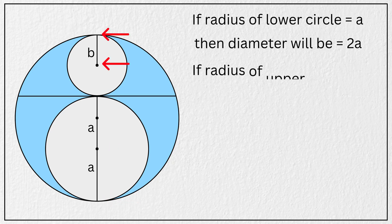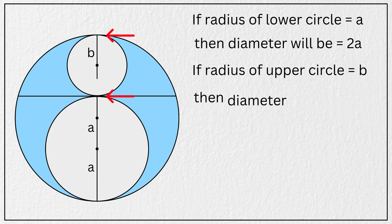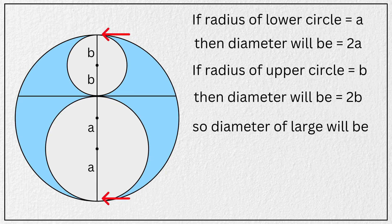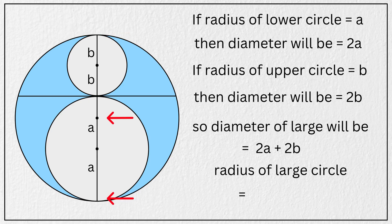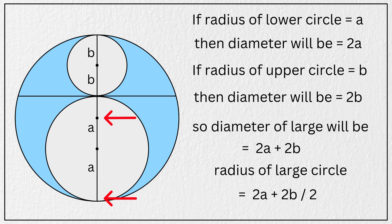Similarly, if the radius of this circle is B units, then its diameter is 2 times B. That means the diameter of this large circle is equal to 2A plus 2B, and radius of this large circle will be 2A plus 2B, all divided by 2, which simplifies to A plus B. So this length here is A plus B units, right?